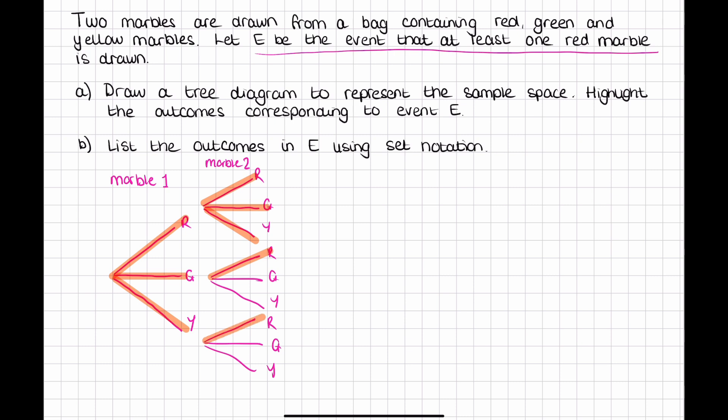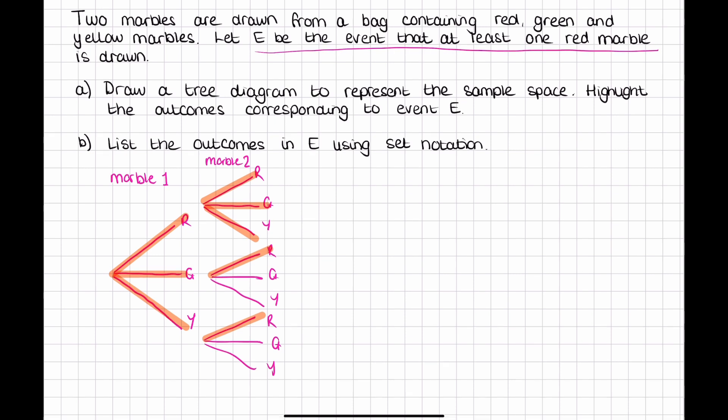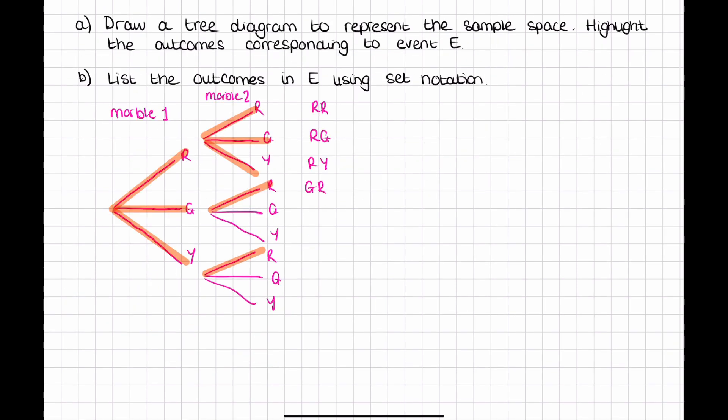Now when we're drawing a tree diagram I would also like you to always write the outcomes straight away on the side. Our outcomes would be red and red, red and green, red and yellow, green and red, green and green, green and yellow, yellow red, yellow green, and yellow yellow.